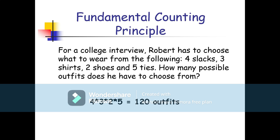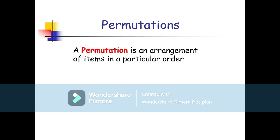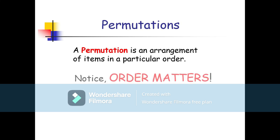What happens in permutation? Permutation is an arrangement of items in a particular order. For example, if you have a password with digits one, two, three, the order matters.